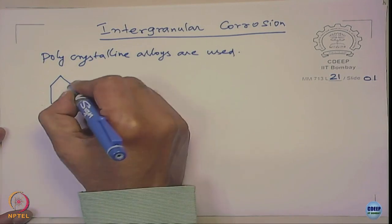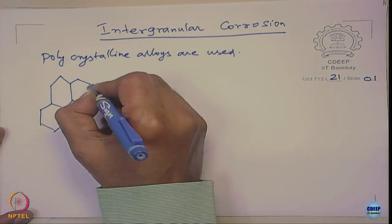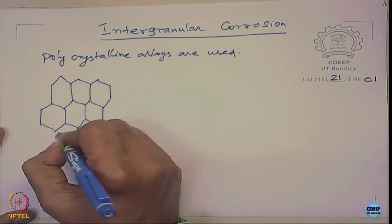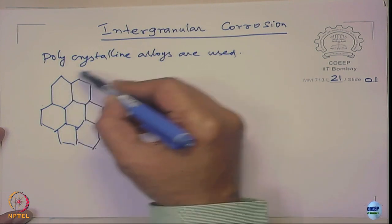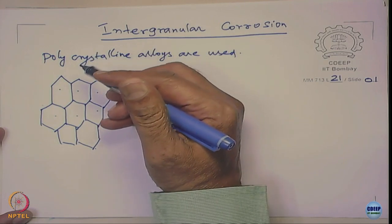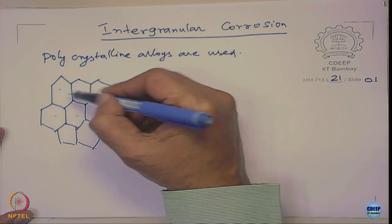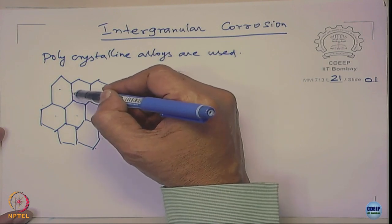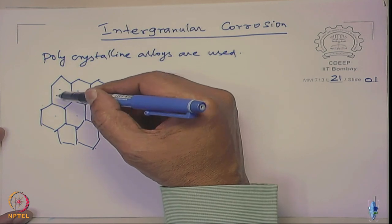Schematically, each of these grains can be considered as a single crystal. They have a similar orientation of atoms, and since these crystals have different orientations at the interface, you will have a mismatch between the surrounding crystals.